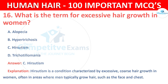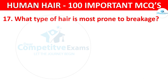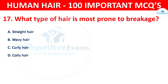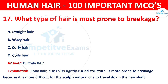Question number 17. What type of hair is most prone to breakage? The correct answer is D — coily hair. Coily hair, due to its tightly curled structure, is more prone to breakage because it is more difficult for the scalp's natural oils to travel down the hair shaft.